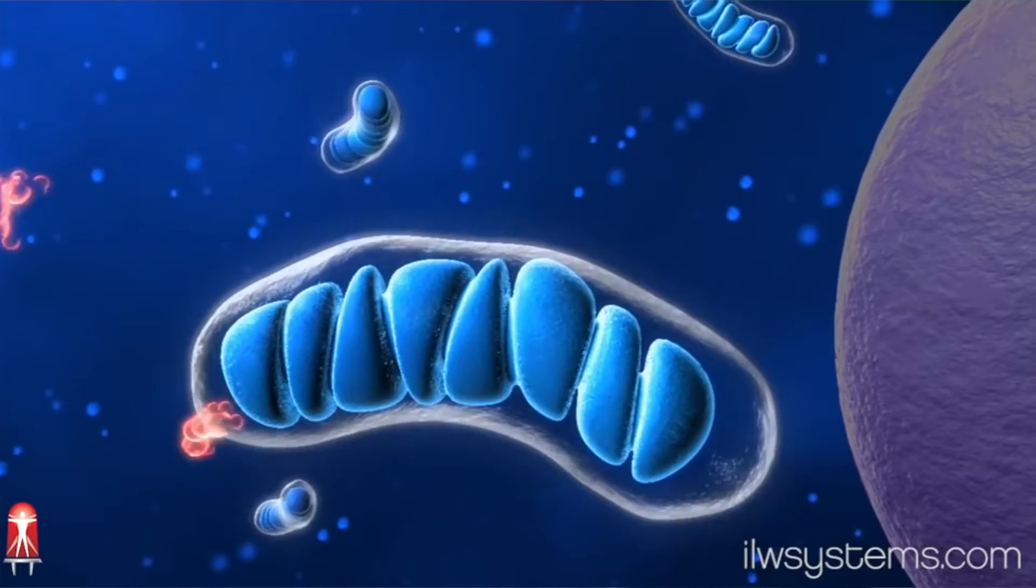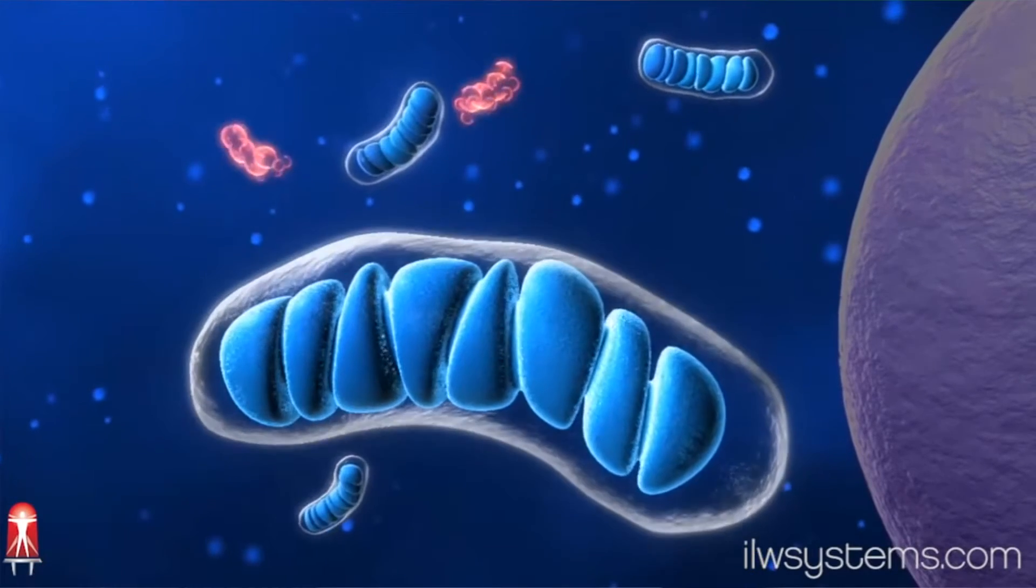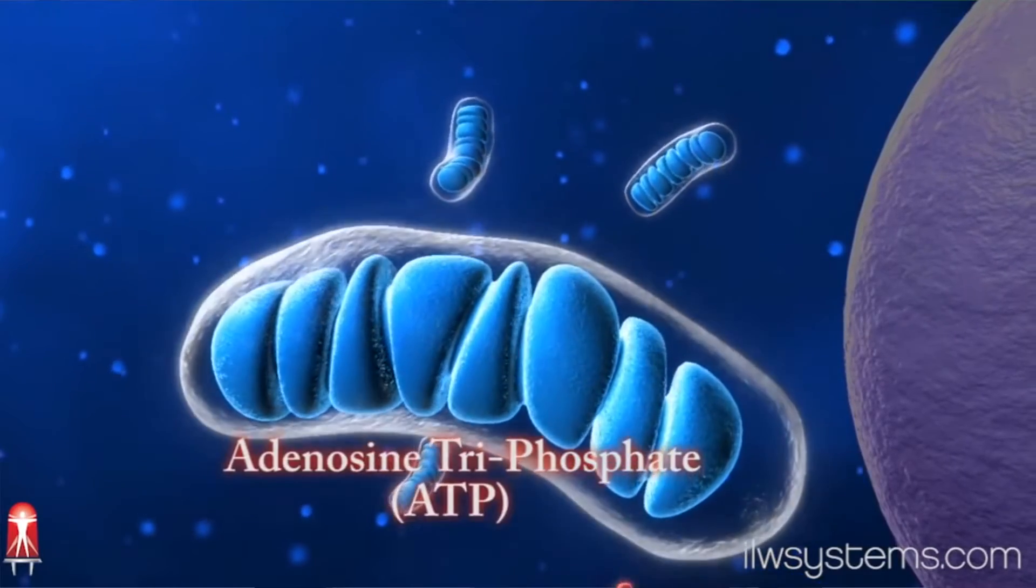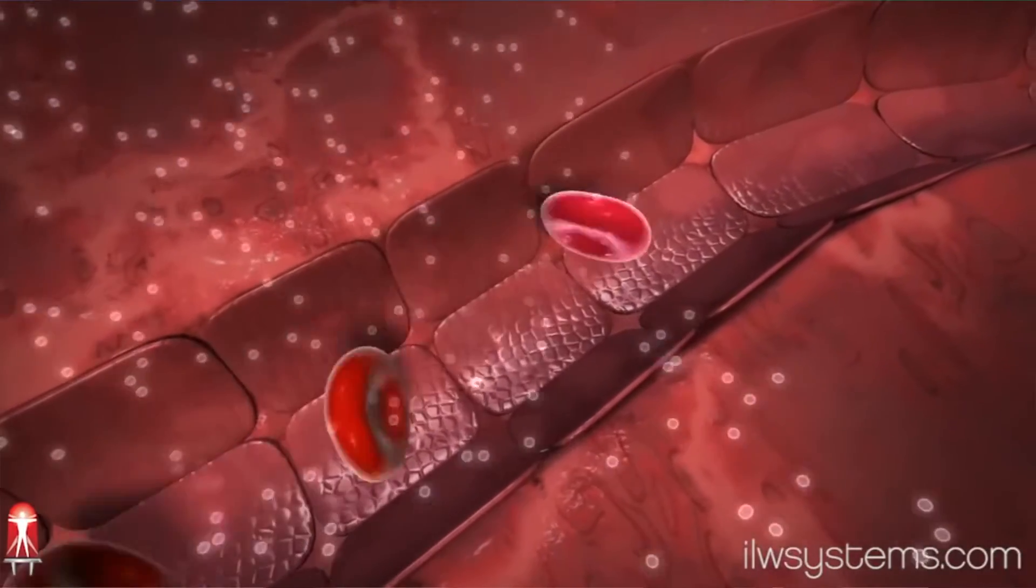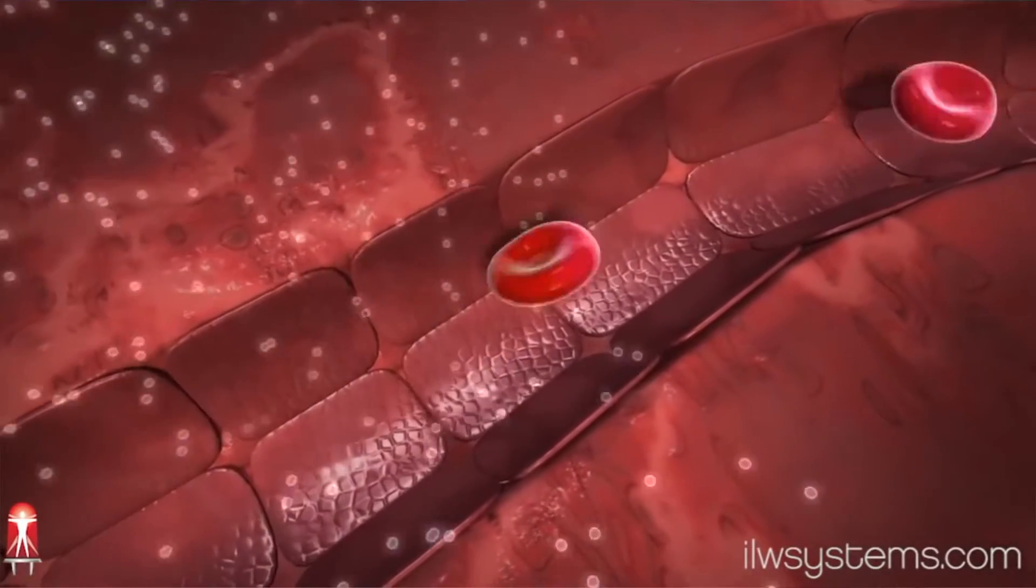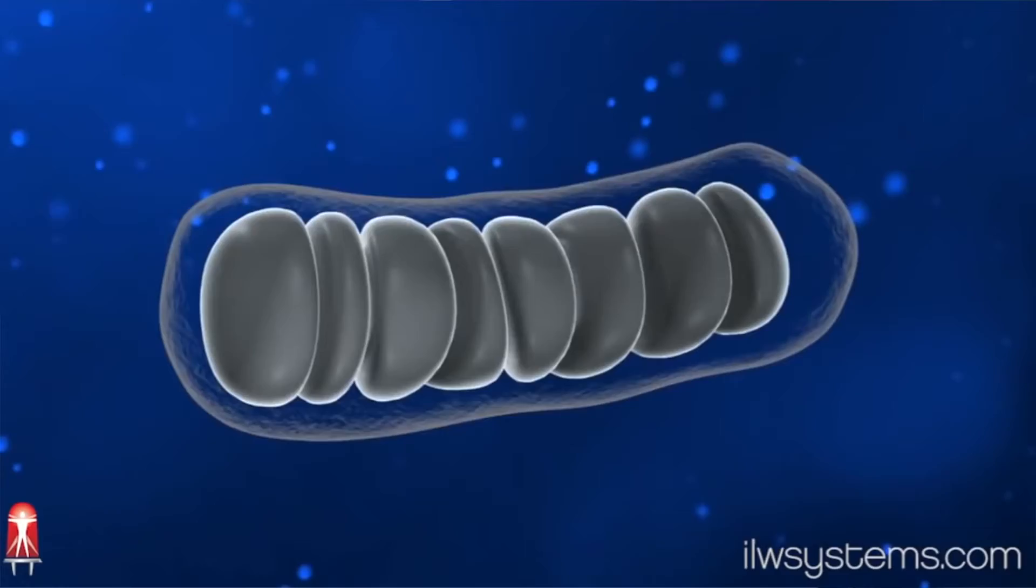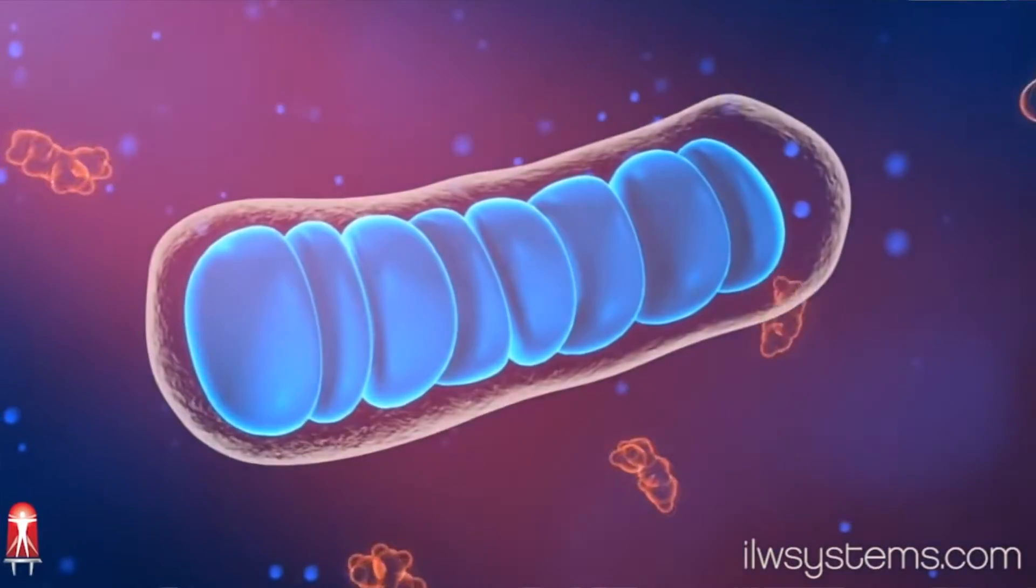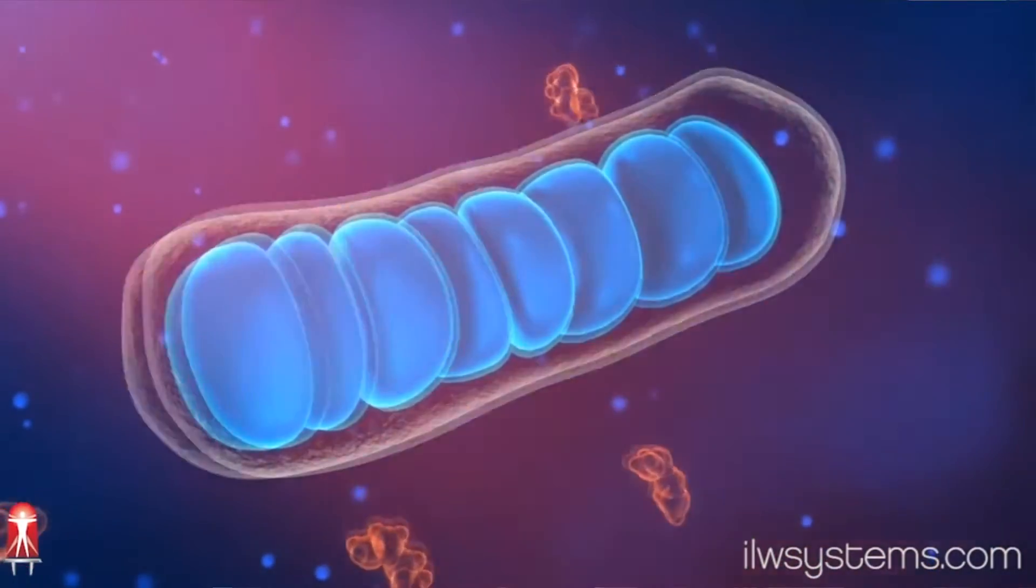One way to look at aging is actually the degeneration of the mitochondrial process, that is, the production of cellular energy. And so what we're actually doing is countering that process. We're turning it back on. We're energizing cells that aren't able to produce energy for themselves.